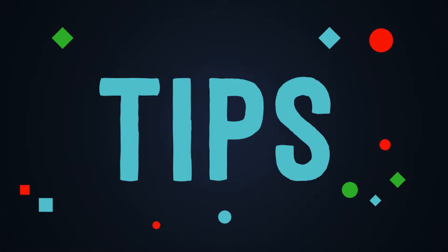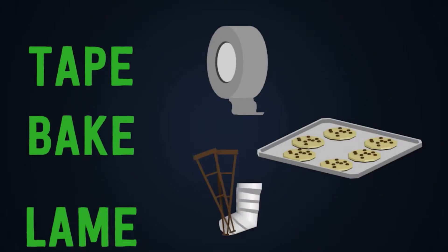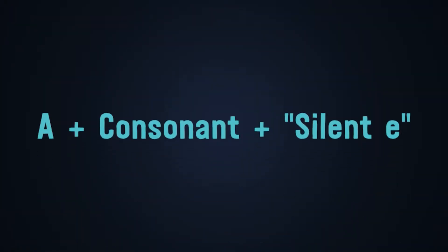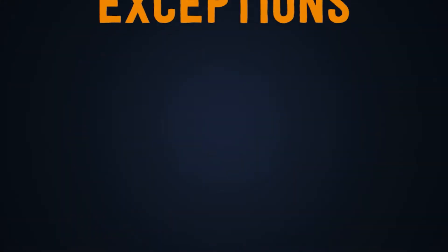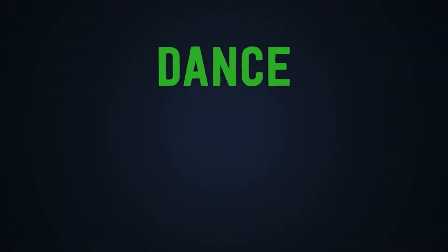Number one: when letter A sounds 'eɪ'. Take for example the following words: tape, bake, flame. If you notice, you can spot a pattern — letter A plus a consonant plus a silent E. Letter A normally receives the pronunciation 'eɪ' in words that share this pattern. There are some exceptions — take for instance the words dance and freelance.